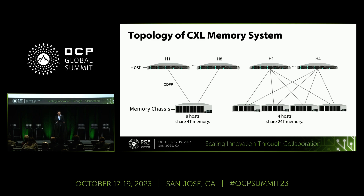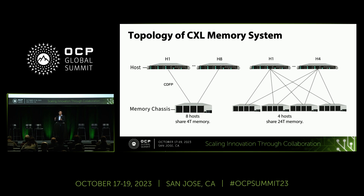Here are two examples of topologies. There are eight hosts connected to one single CXL memory box, creating memory sharing — it's a memory pool. A memory chunk can be assigned to one host, then returned back when it's no longer needed. In some cases, if you want a bigger memory cluster, you could have four hosts and four CXL memory chassis, creating up to 24 terabytes of memory for those four hosts to use.